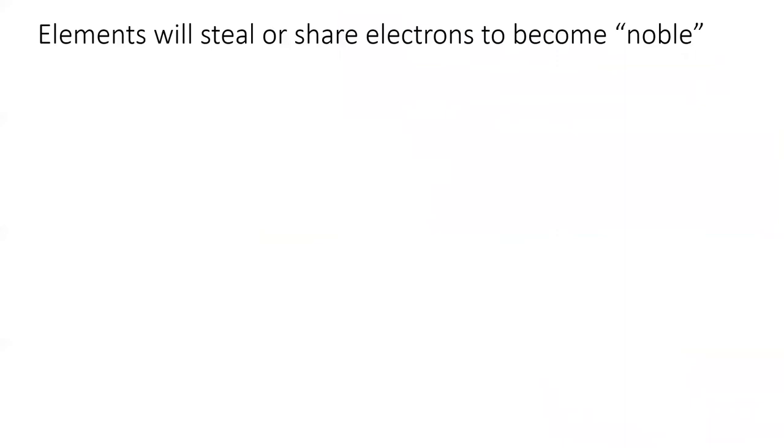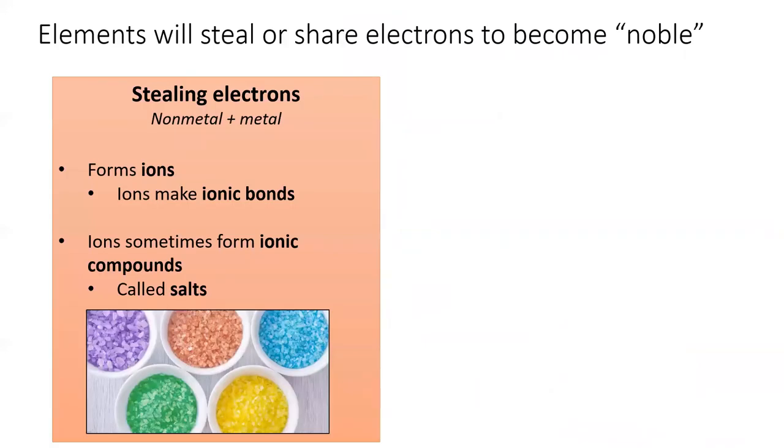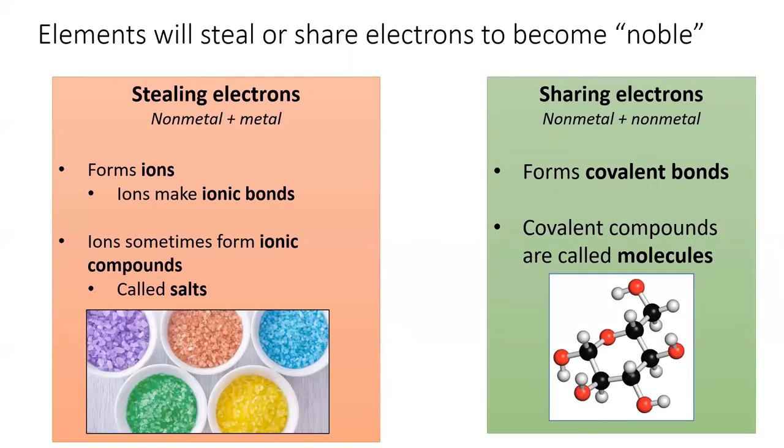As I mentioned, elements will steal or share electrons to become noble. This lesson focuses on ionic compounds, which are formed by one element stealing electrons from another. Ionic compounds are also called salts. Section 2.6, as well as chapters 8 and 9, will focus on compounds who share electrons. These compounds form molecules.